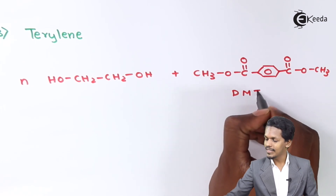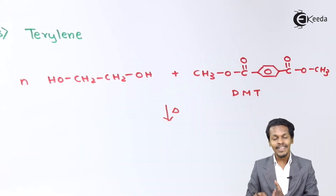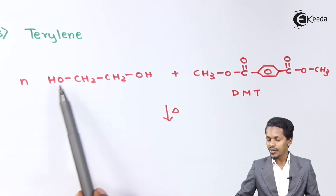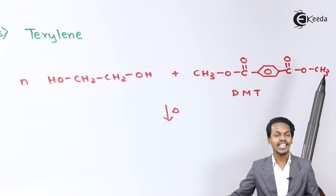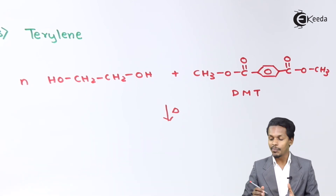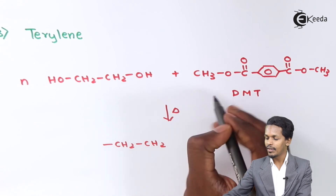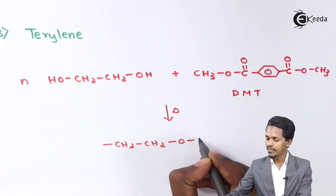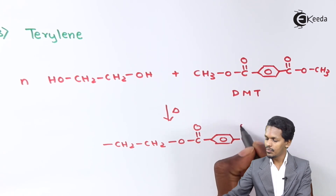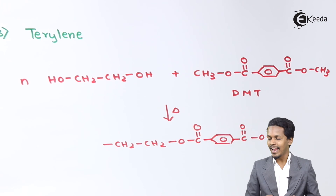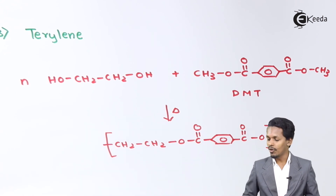As the reaction proceeds, the OH group and CH3 group are removed as methanol (CH3OH) from both ends. The repeating unit obtained is -CH2-CH2-O-C(=O)-C6H4-C(=O)-O-. This is how the polymer Dacron (also known as Dacron) is formed — it is a polyester and an example of a condensation polymer.